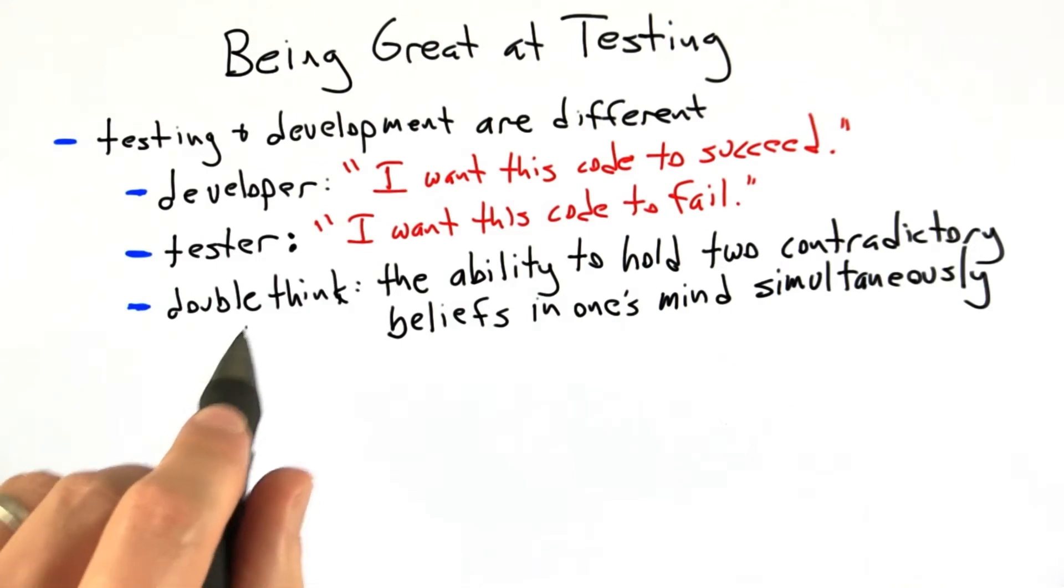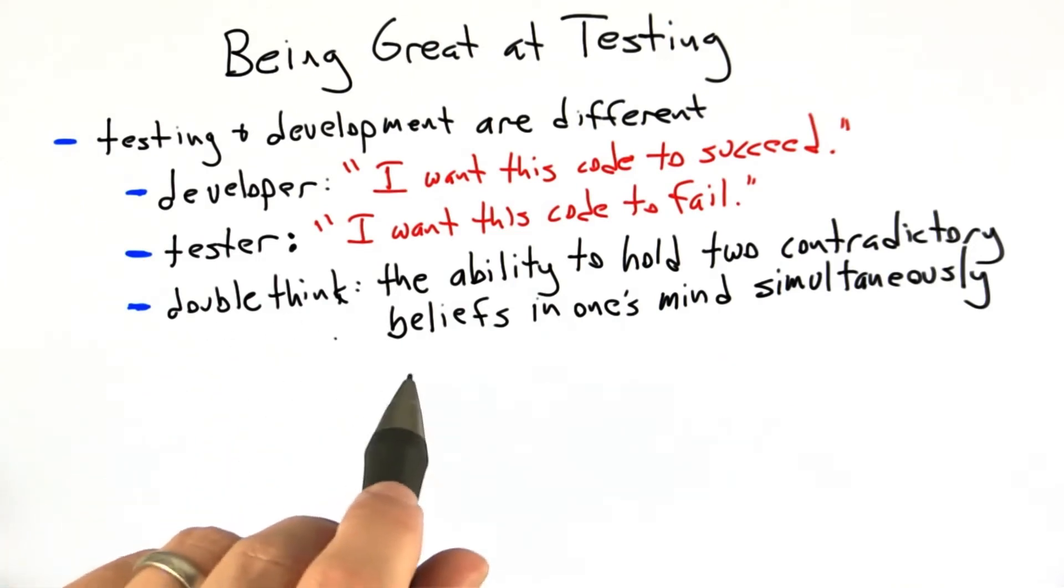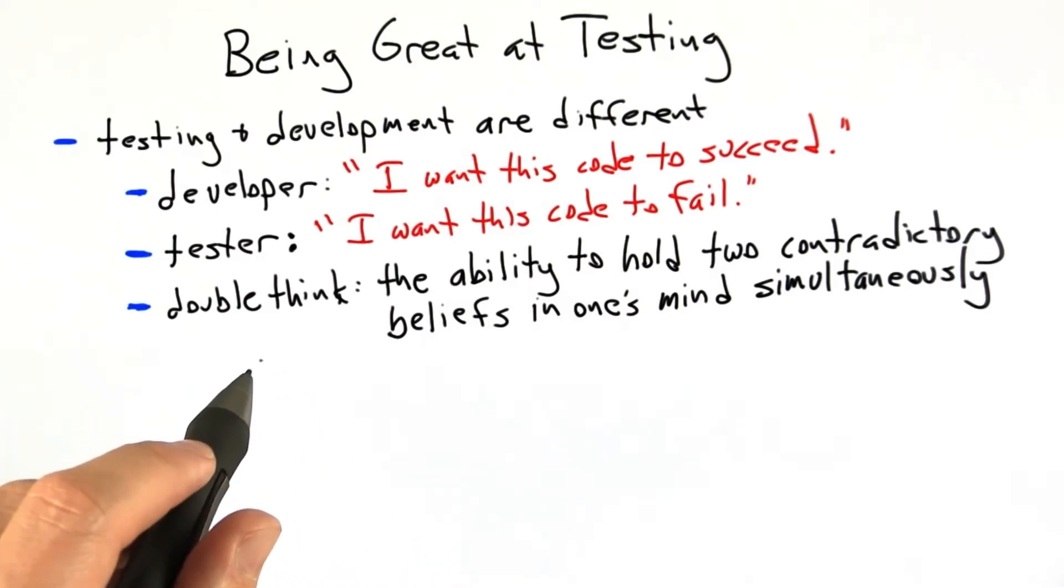Those of you who read Orwell will know that double-think is the ability to hold two contradictory beliefs in one's mind simultaneously. And there is a bit of that required in order to be a great tester and a great developer.